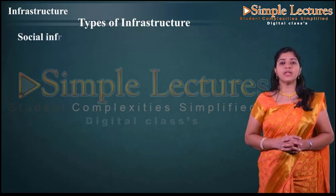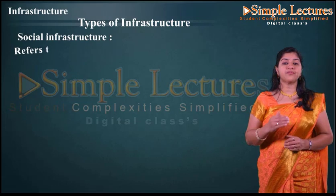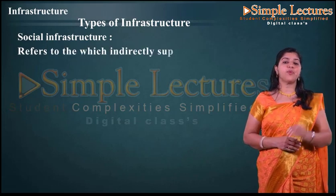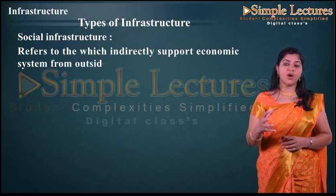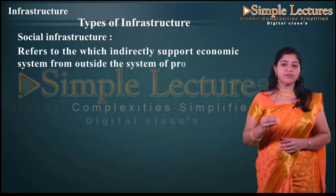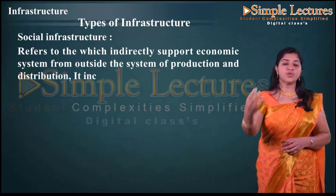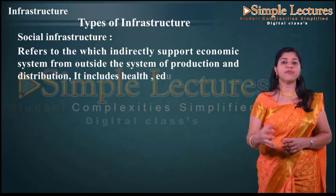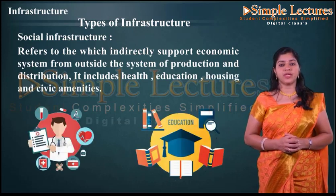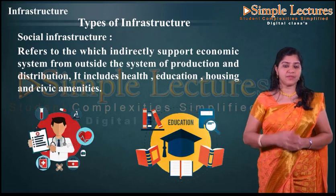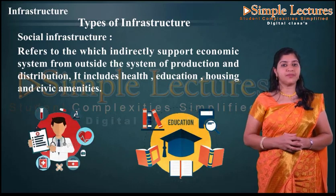Next is social infrastructure. Social infrastructure refers to the infrastructure which indirectly supports the economic system from outside — outside the system of production and distribution. It includes health facilities, educational facilities, housing, and civic amenities.